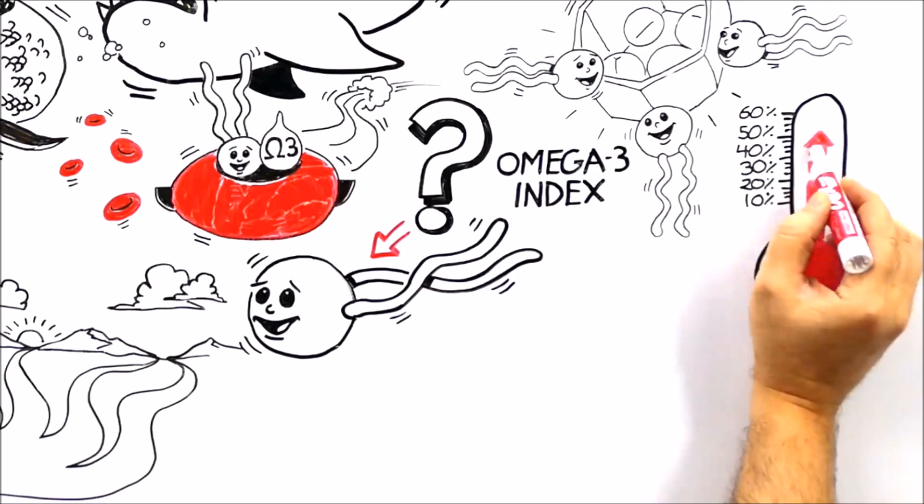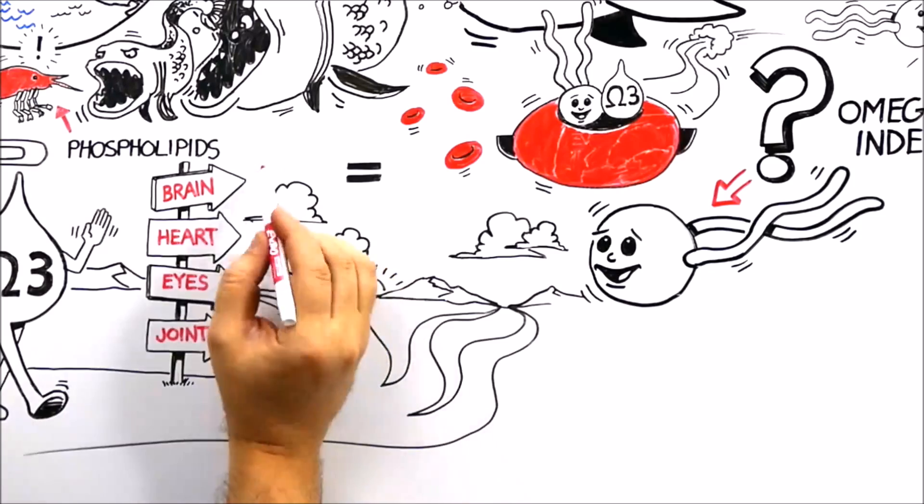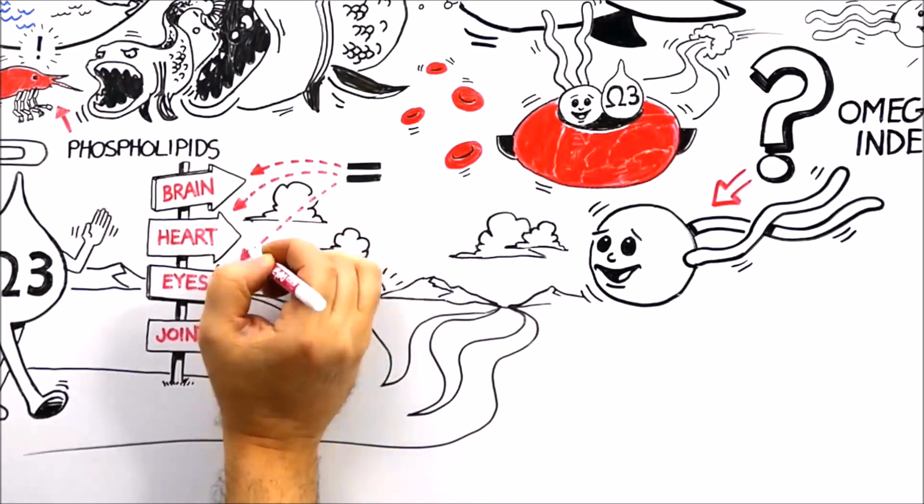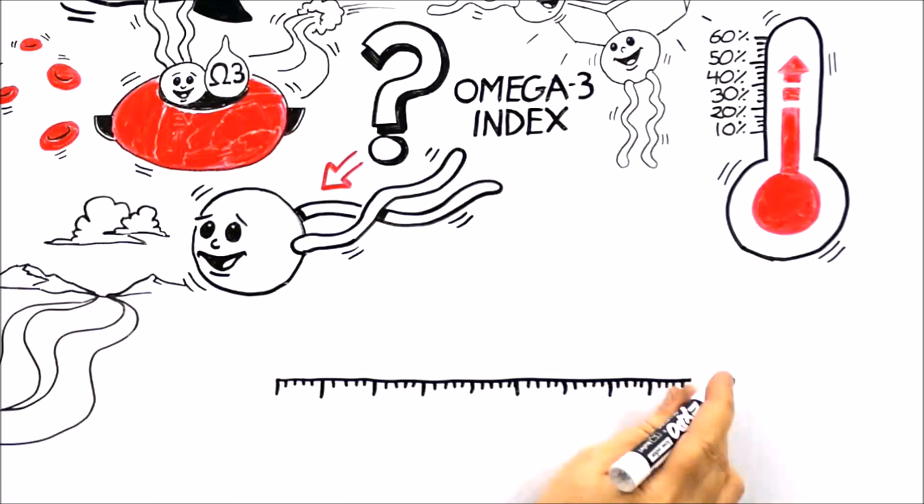The presence of omega-3 fatty acids in red blood cells is a reflection of the amount of omega-3s in your tissues and organs. An omega-3 index of 8% or above is considered optimal.